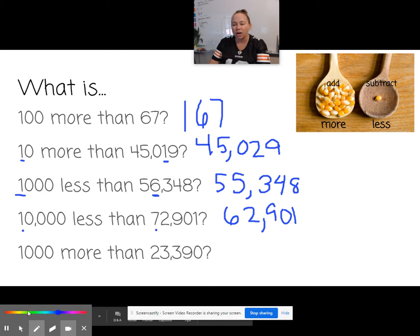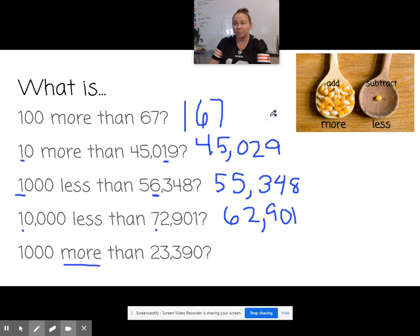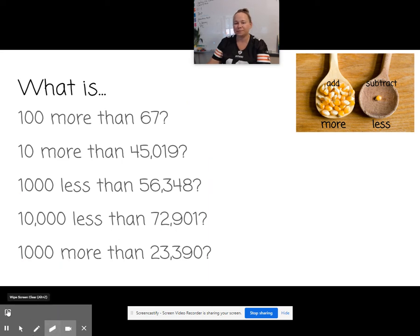1,000 more than 23,390. More means we're going to be adding. So 1,000 more, we're in the thousands place, which is here. So I'm going to make this 1,000 more than 3,000, which would be 24,390. How'd you do? Good. Good.